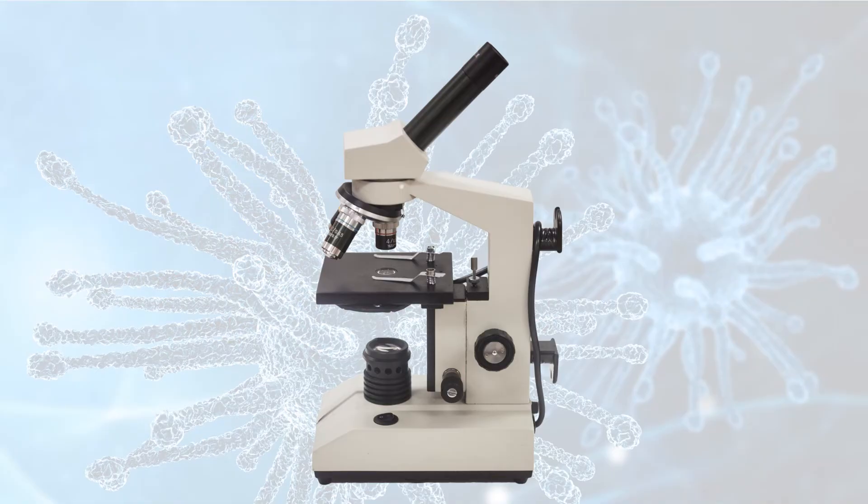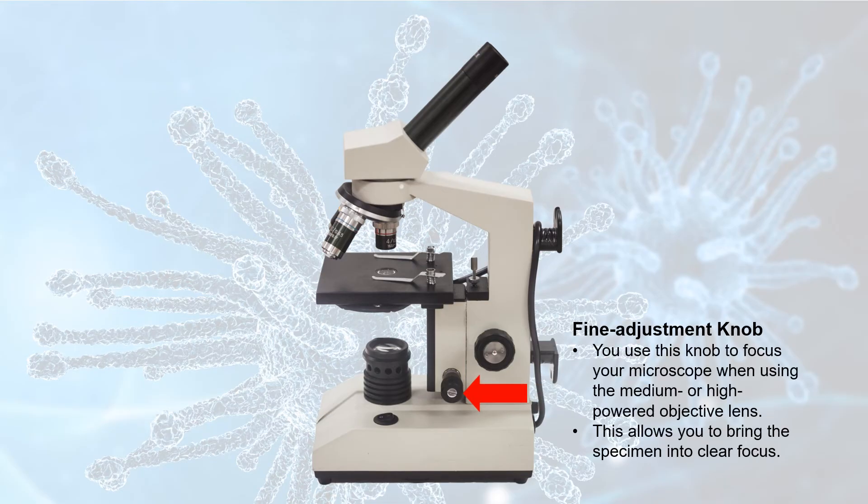When using either the medium or high power objective lens, you can use the fine adjustment knob. That's the small one, right here. And this lets you make sure the focus is nice and sharp.